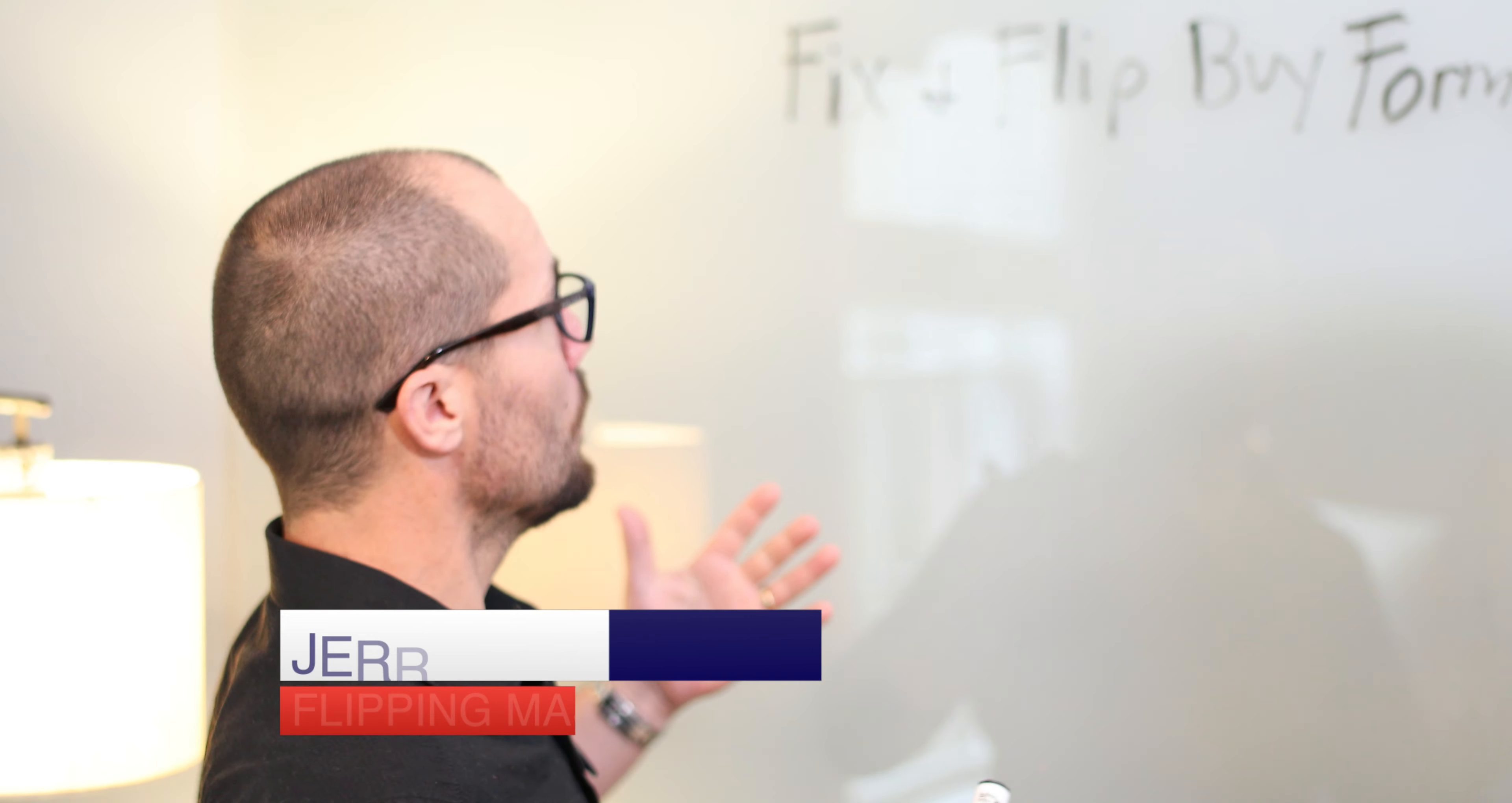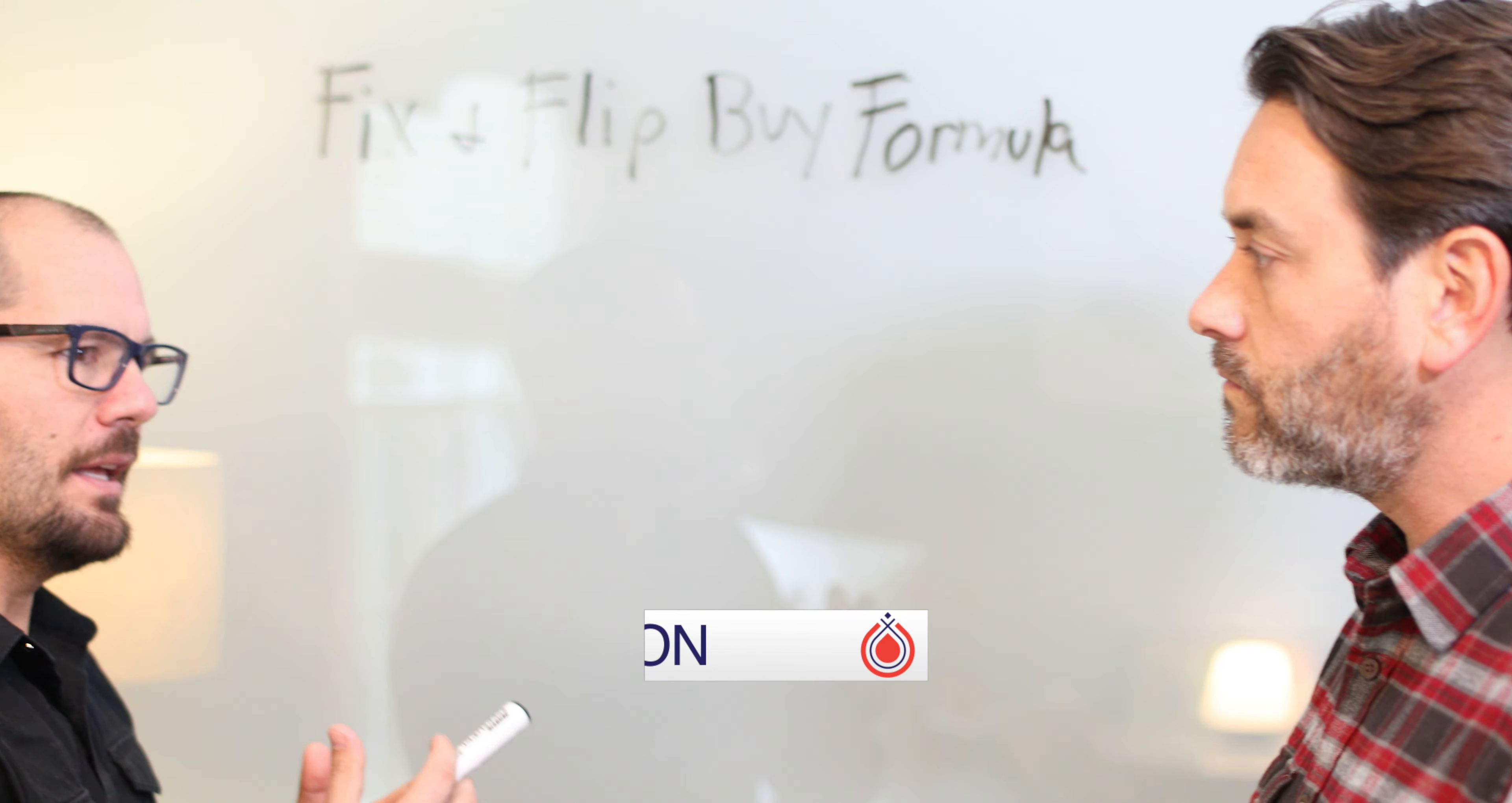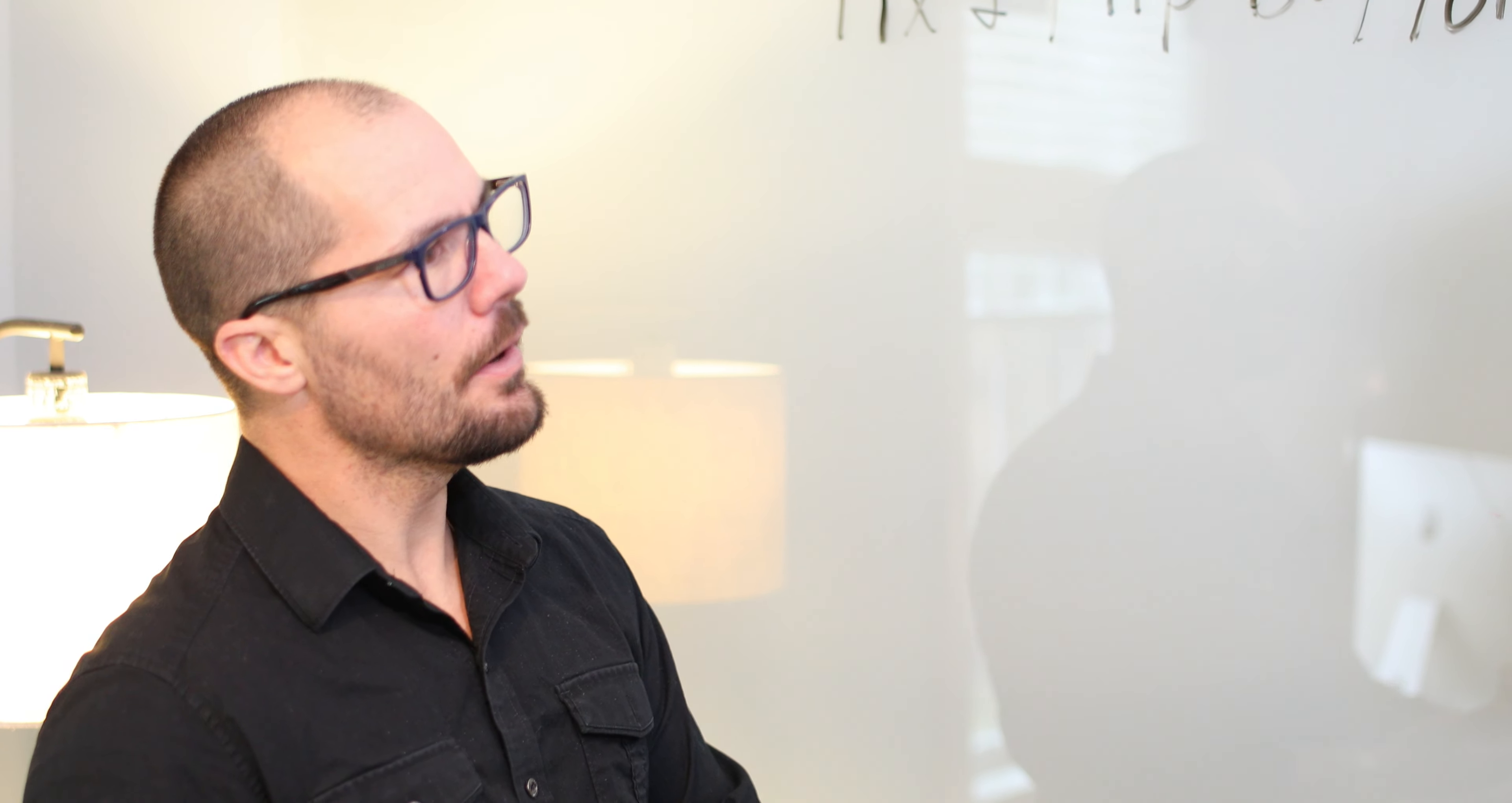Right. Well, good. So with fix and flip, we follow a formula that lets us know, okay, if I run my numbers and I pick up a property at X price, I can count on a certain type of profit. I factored in for all of the costs that are associated with doing this deal. So that way, you kind of can know going in what your whole deal looks like.